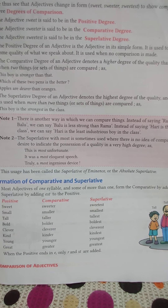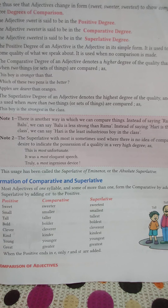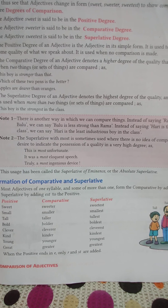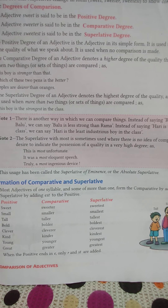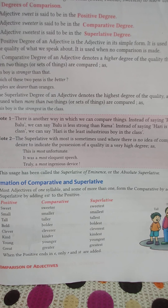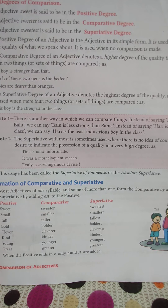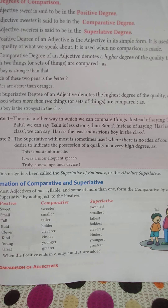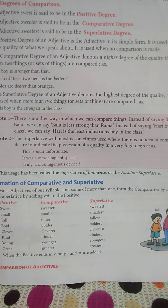Now let's read Note 1. There is another way to compare things. Instead of saying 'Rama is stronger than Balu,' we can say 'Balu is less strong than Rama.' Instead of saying 'Hari is the laziest boy in the class,' we can say 'Hari is the least industrious boy in the class.' By changing the sentence, we can keep the meaning the same.